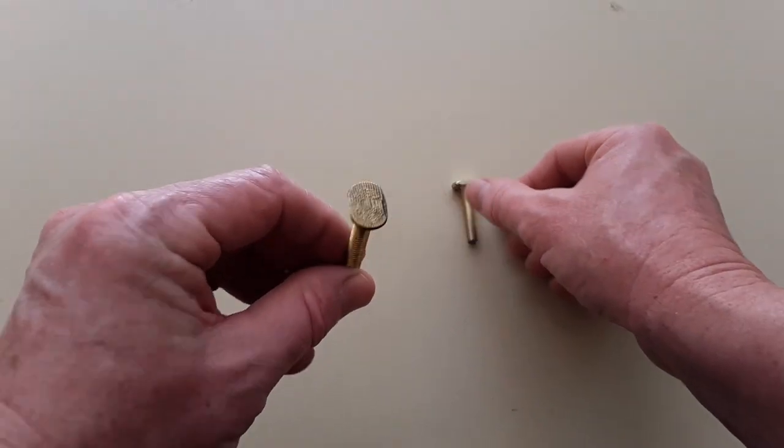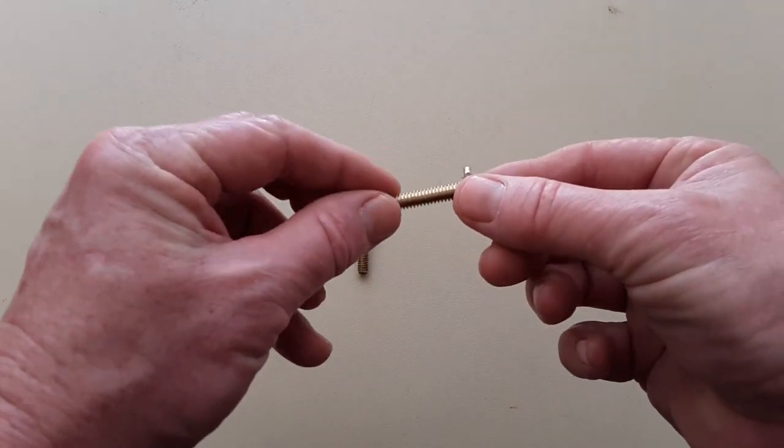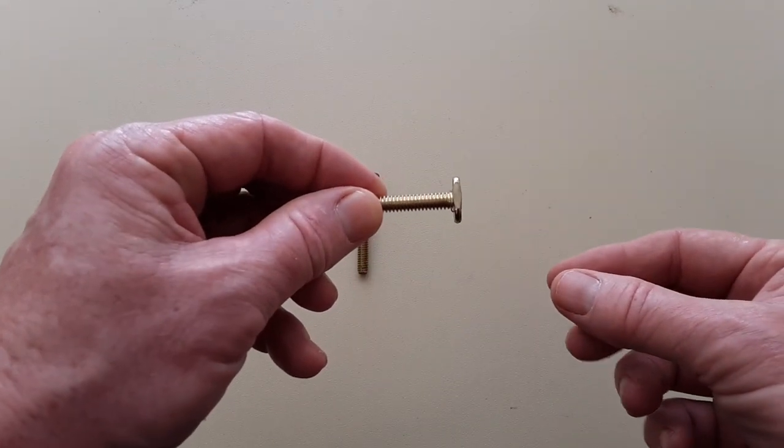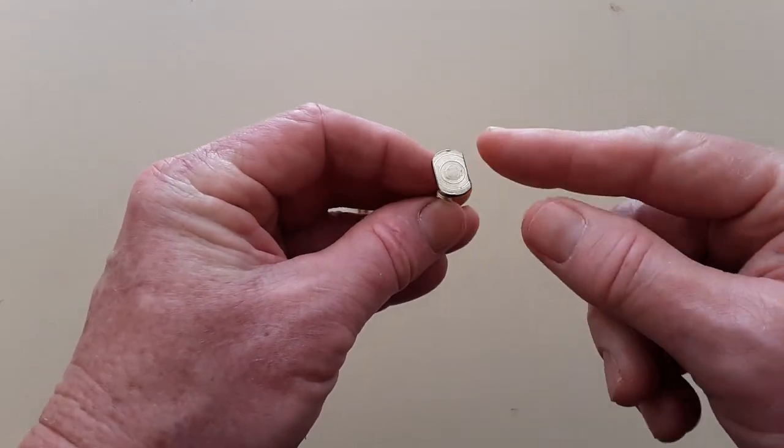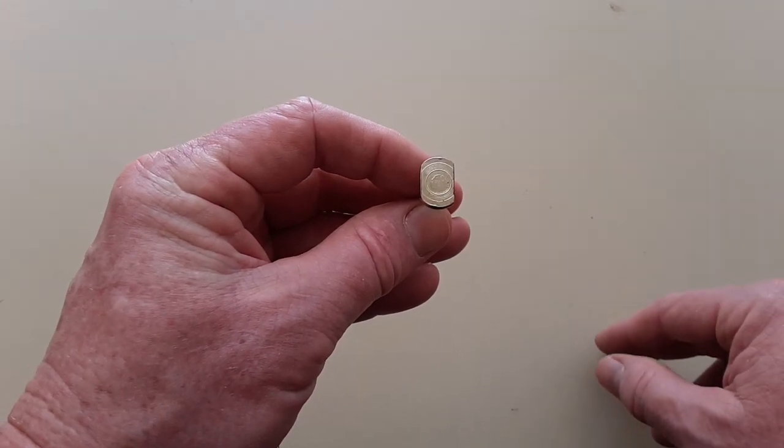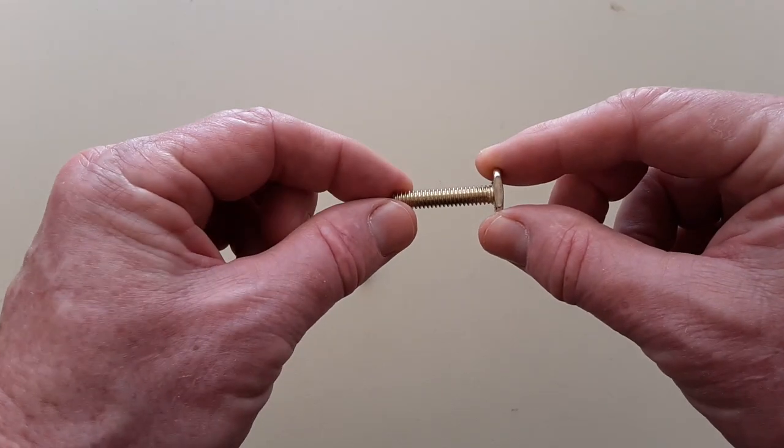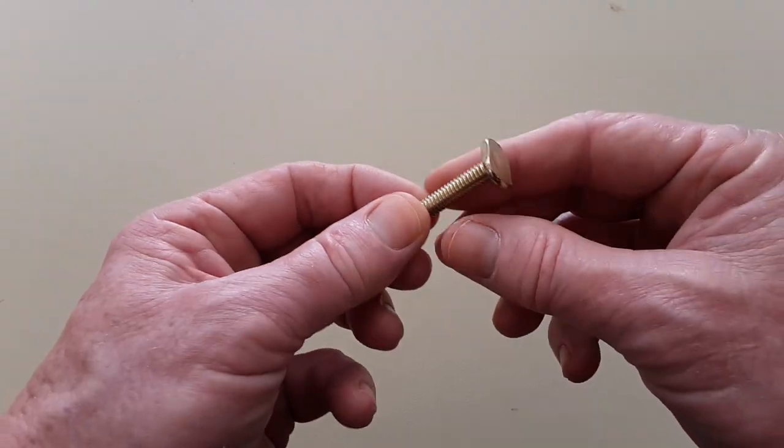This is one that I've already modified. I've shortened it to fit in my T-Track. And then what I also did was I used a file and filed down one side of it so it will fit in the track. And the reason I chose these T-Bolts is because they're made from brass and brass is a soft metal to cut.